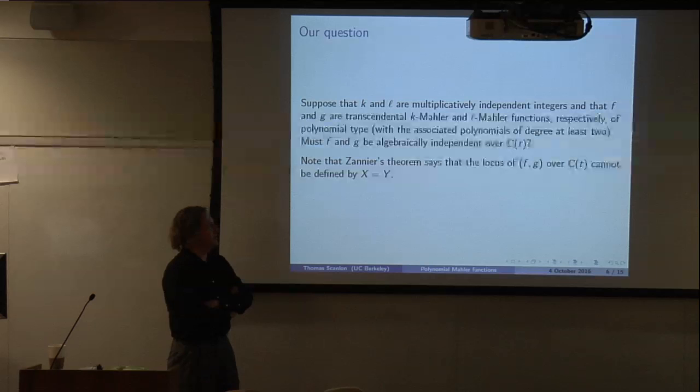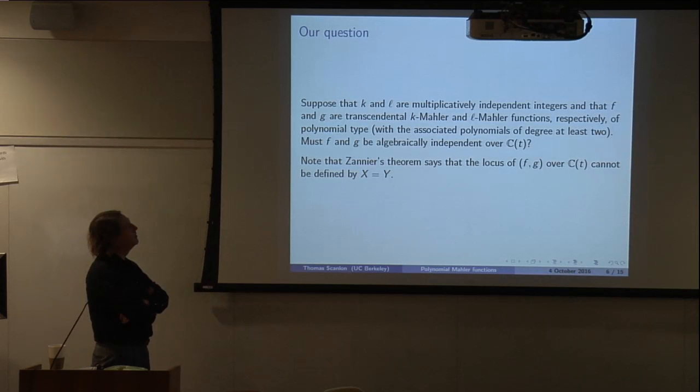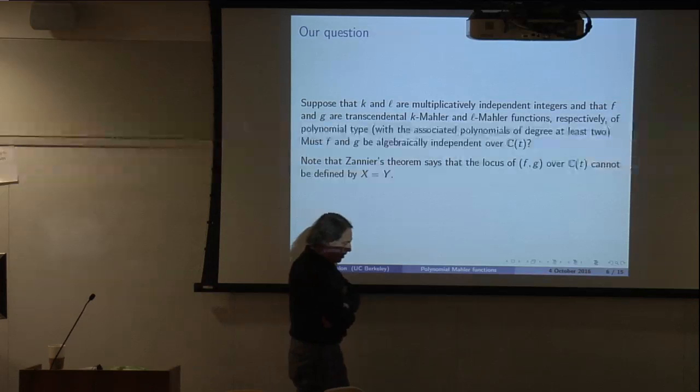Zonier's theorem is the case F equals G — the dependence between them is just X equals Y. That's a special case of this, but it doesn't totally answer the question. This is for a single iteration: F(T^k) equals a polynomial. Because you can substitute and iterate the automorphism — F(T^k) equals polynomial in F, then F(T^{k²}) equals something you can iterate to get some other equation.